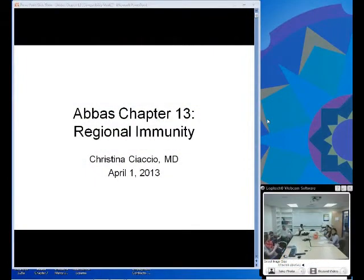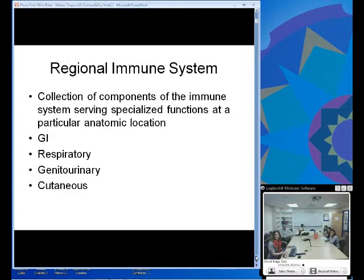Today we're talking about Chapter 13, which is regional immunity. There's actually almost nothing new introduced, but it just tries to put together the different components that we learned at different sites. The regional immune system is a collection of components of the immune system that serves specialized functions at a particular anatomic location.